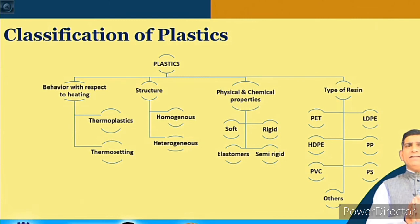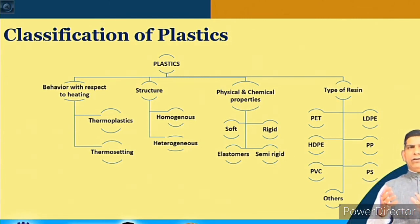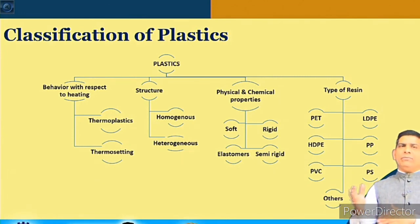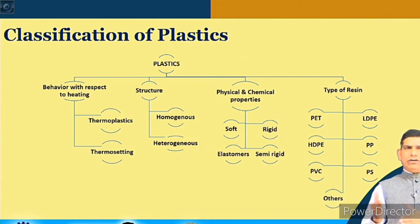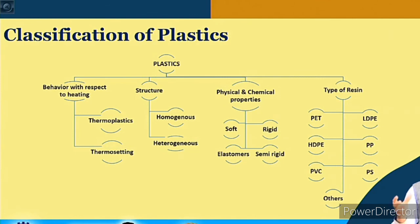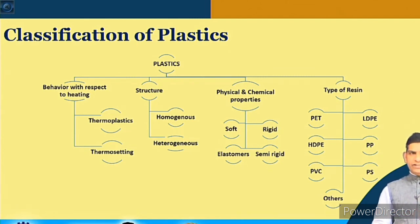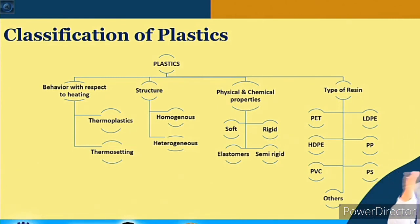Plastics are also given resin identification numbers — 1 through 7. Number 1 means easy to recycle, and as the number increases it becomes more and more difficult to recycle based on available technology today. PET is number 1, HDPE is number 2, and likewise. Whenever you look at a plastic product, check whether it has a recycling number — how close it is to number 1 gives you an idea of how easy it is to recycle.